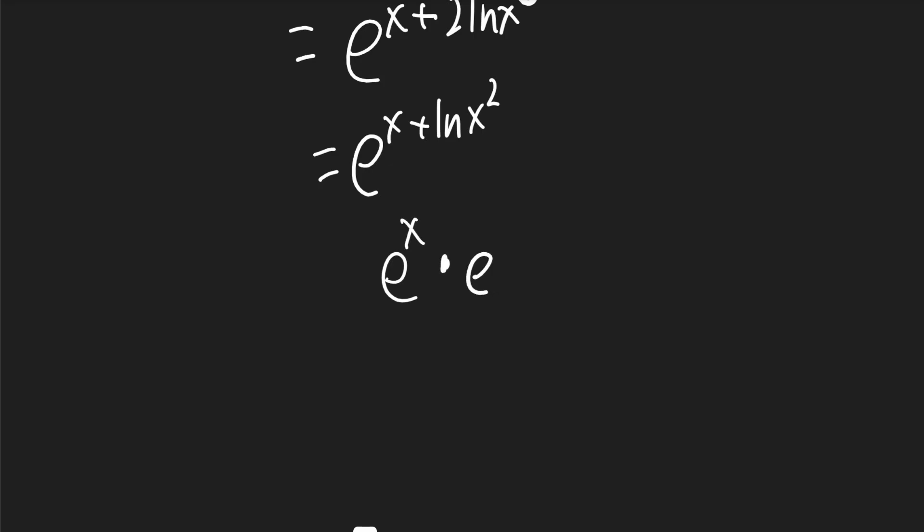Then it'll be multiplied by e to the ln of x squared. The e will cancel the ln and we'll be left with just x squared. So mu will be x squared times e to the x.